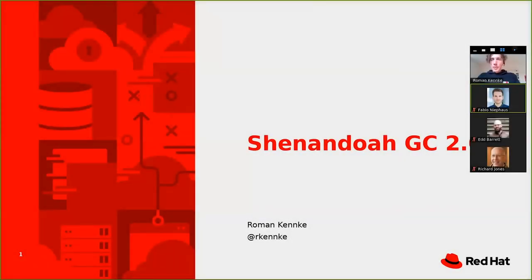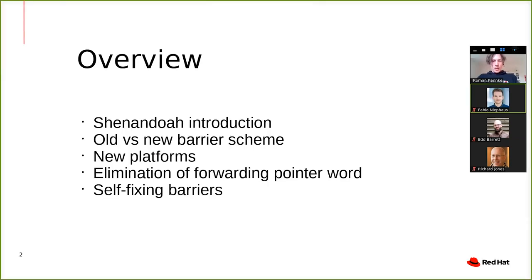As Fabio said, I'm Roman. I work for Red Hat. The last couple of years I've been working on the Shenandoah GC mainly. I'm going to talk specifically about what we came to call Shenandoah GC 2.0. We don't really have a versioning scheme in Shenandoah, but we came to call it that way because we had some new ideas that diverged from the original paper by Christine. So we thought we'd call it 2.0.